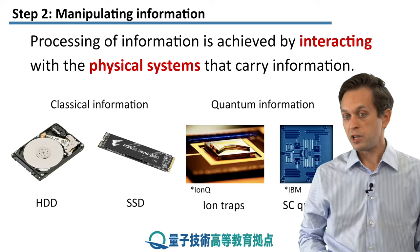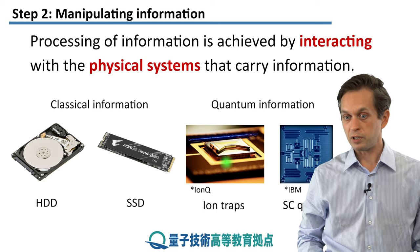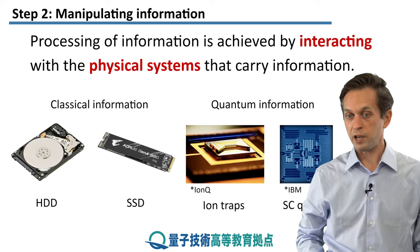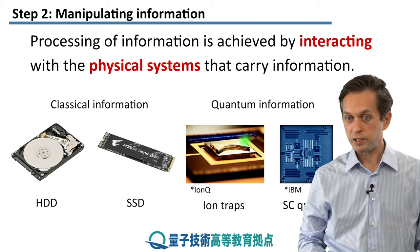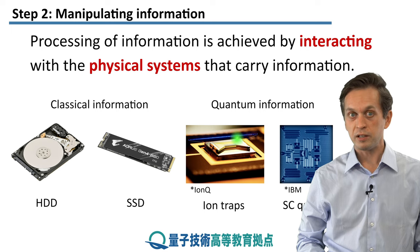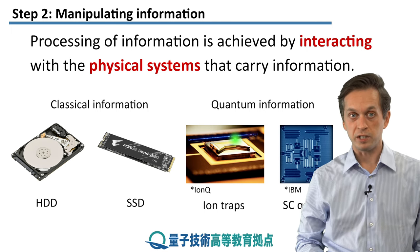On the other hand, in quantum information, you can look at physical systems such as ion traps. For example, this ion trap from a company called IonQ, where individual atoms represented by these blue dots are suspended on magnetic fields and they represent individual quantum bits.